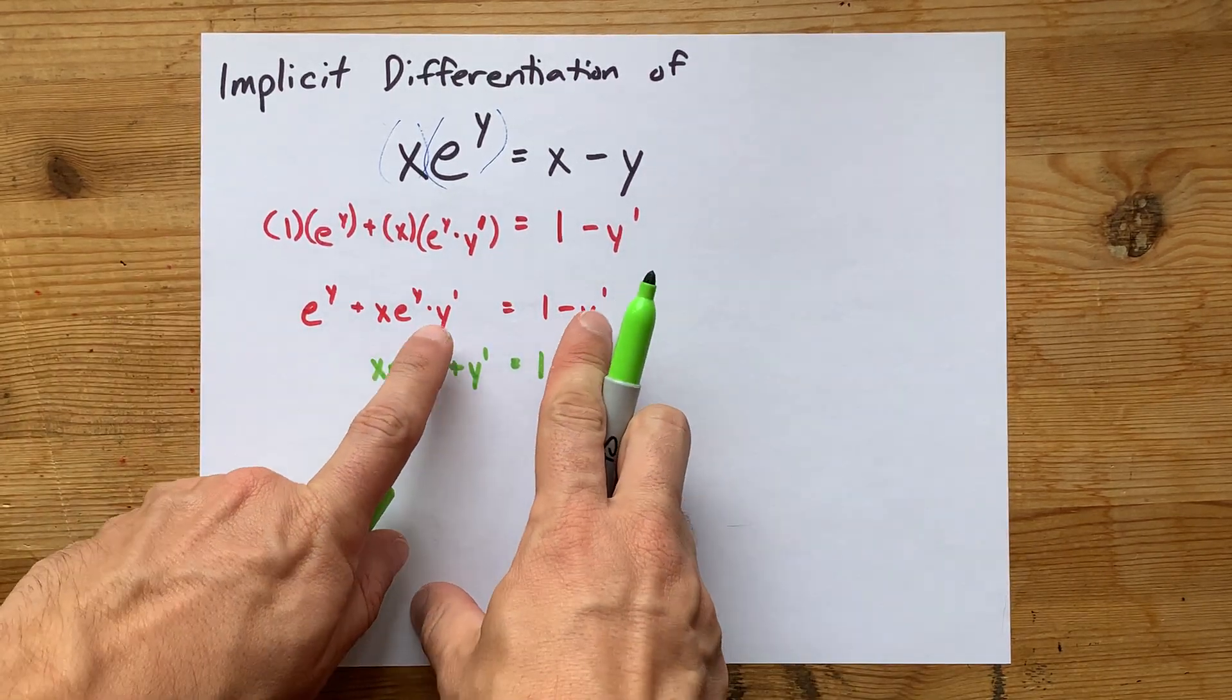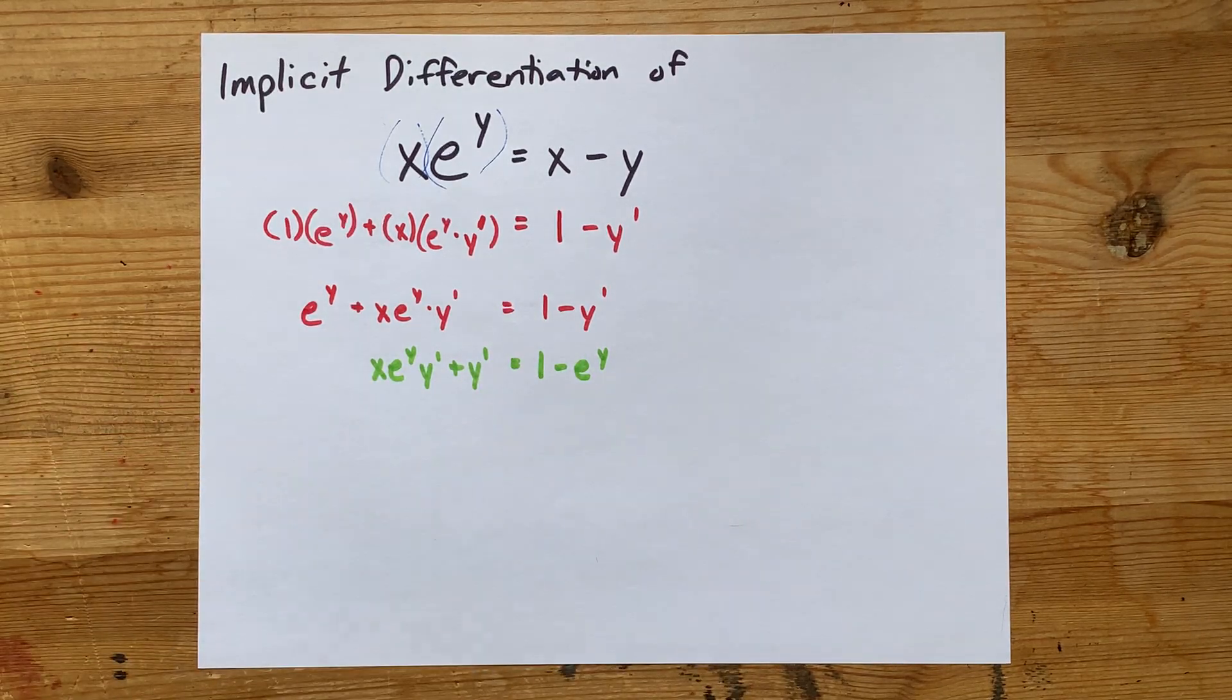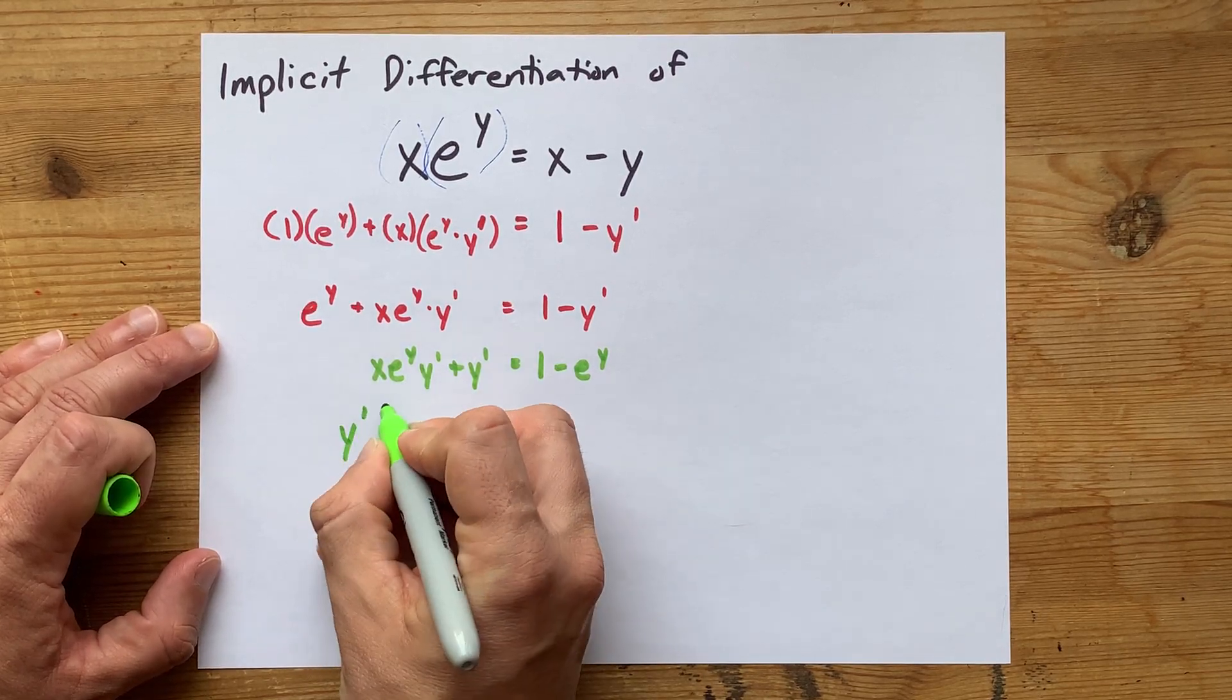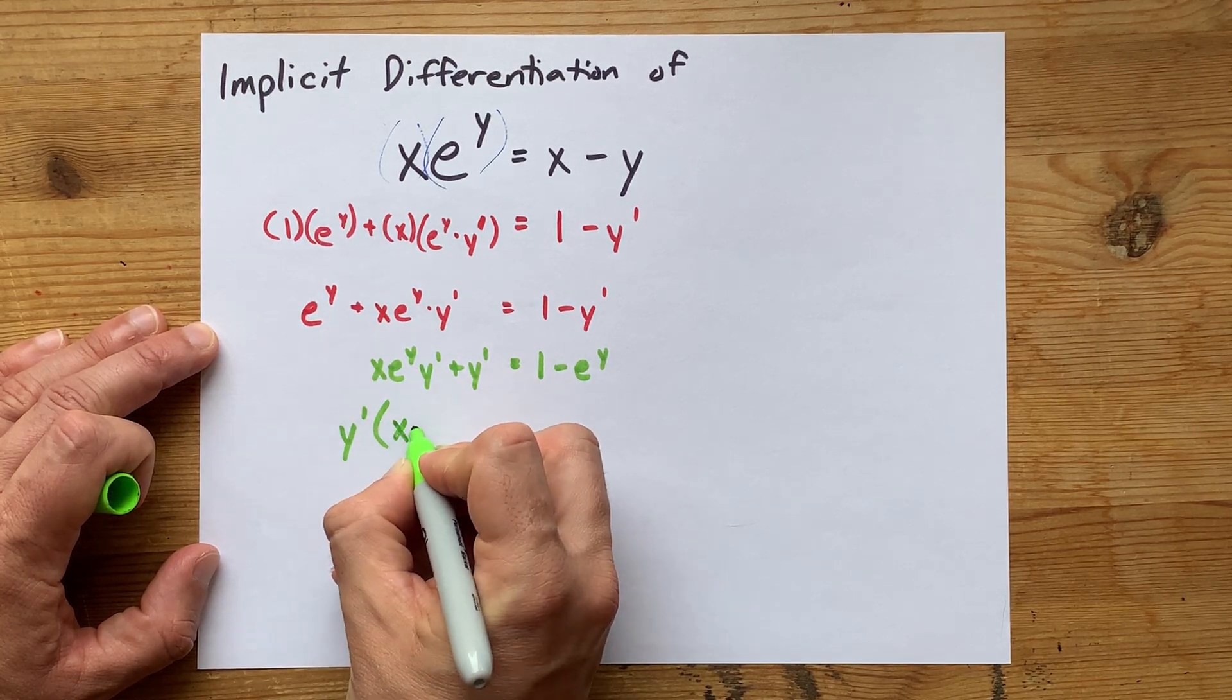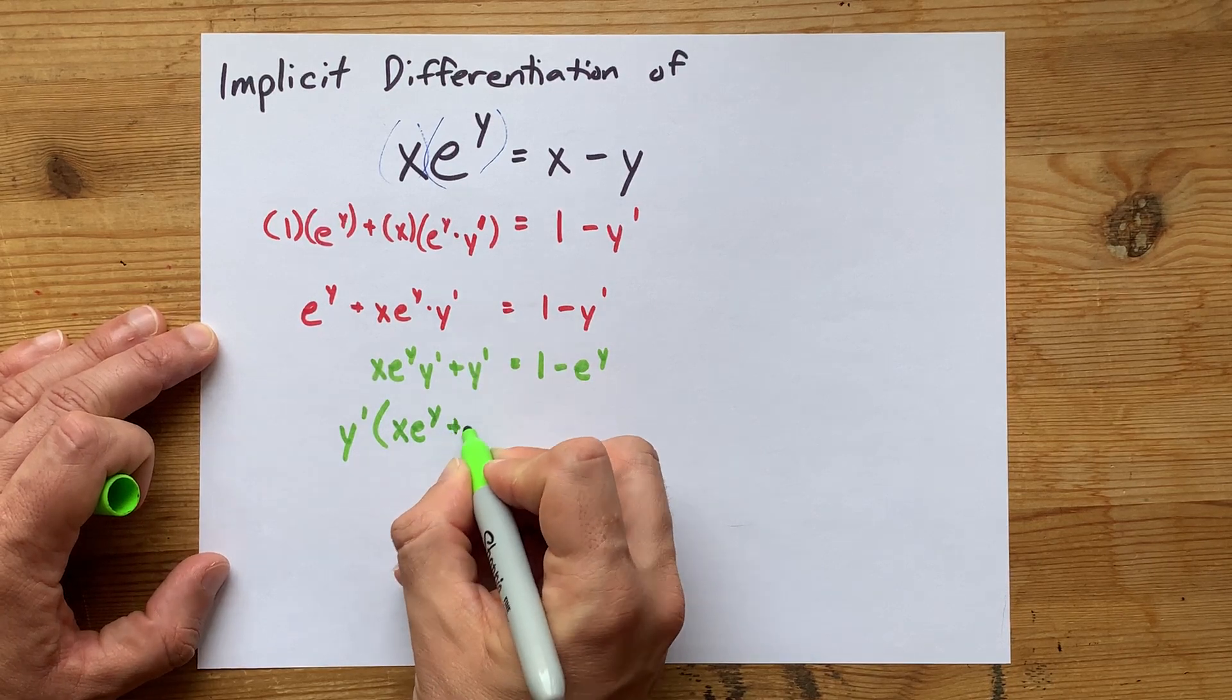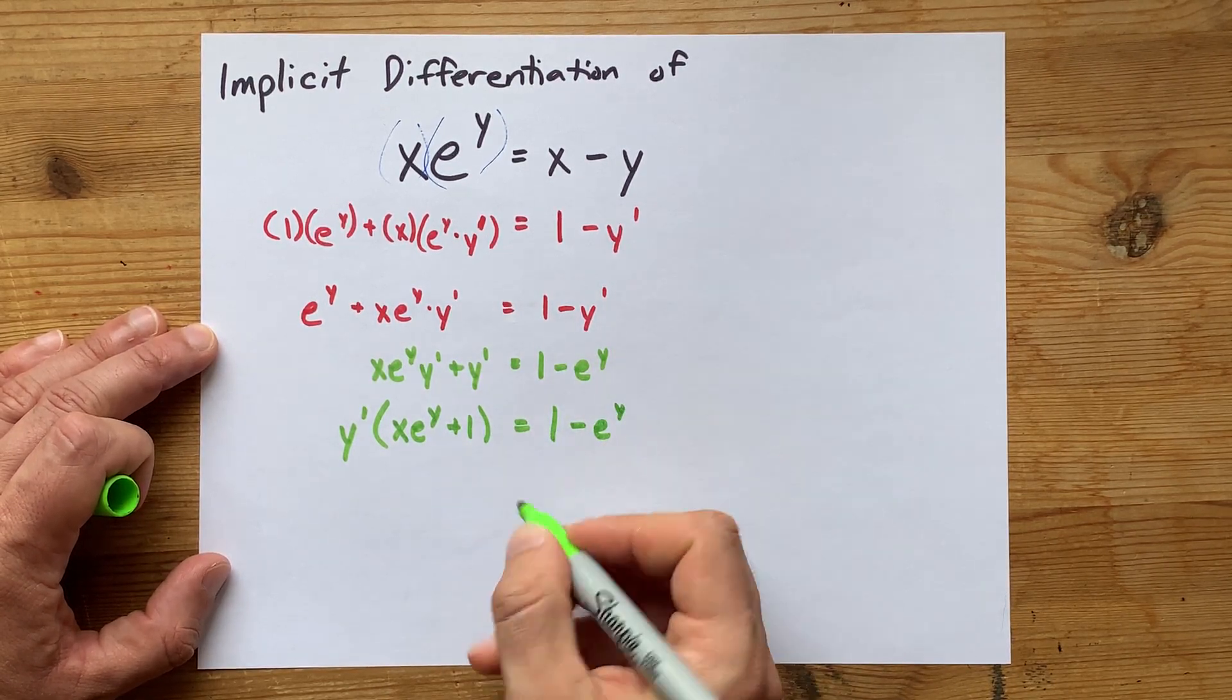Now, the reason I like putting my y primes all on the same side is often I find I can factor it out of those terms. Both of these have y prime in them, so I'm going to factor y prime out. What do I get when I factor it out of this first term? Well, I get x times e to the y. What do I get when I factor it out of here? I get plus 1, and then this side is still 1 minus e to the y.